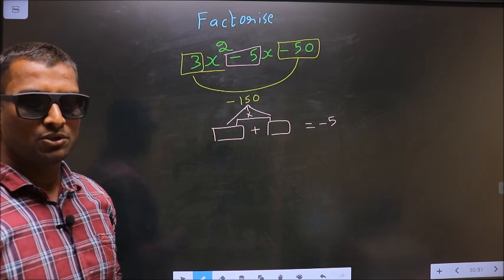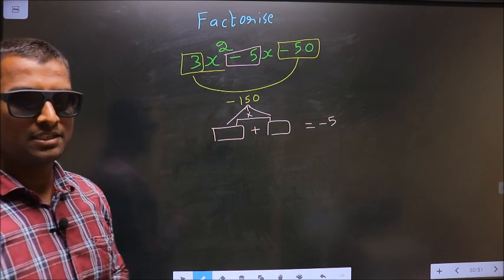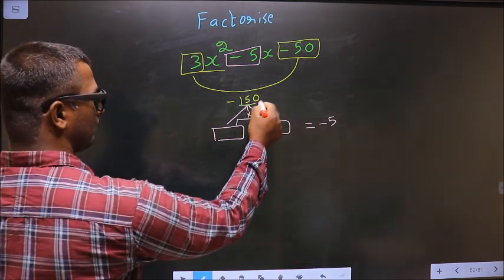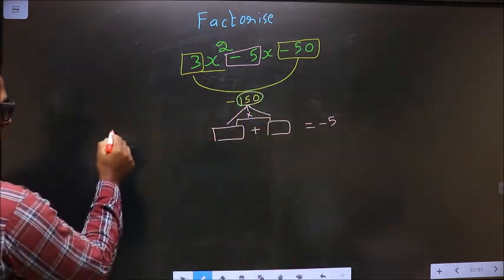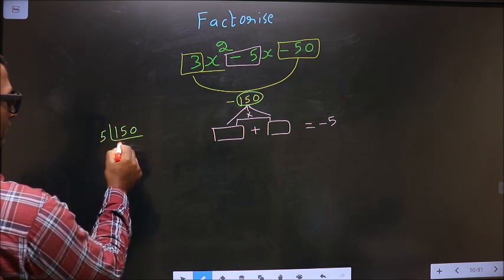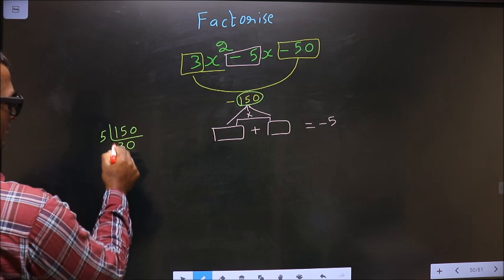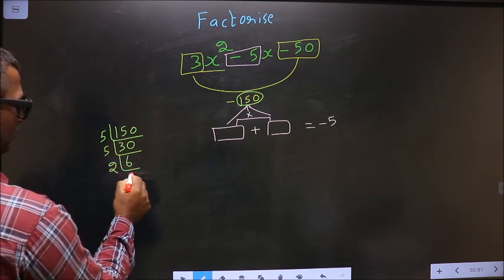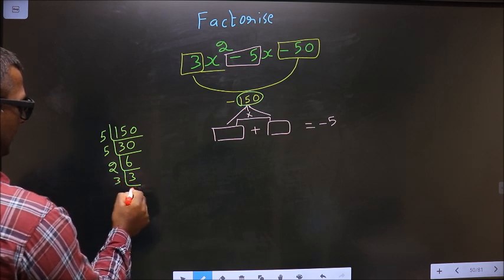To get those 2 numbers, take the LCM of 150. Start with 5: 5, 30. Again 5: 6. Then 2, 3, 3, and 1.